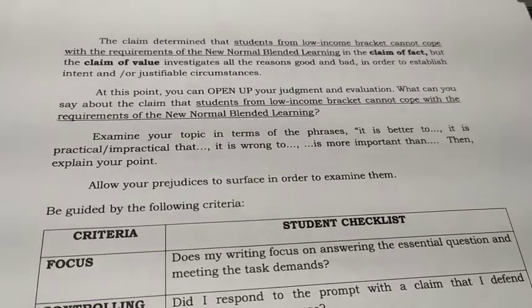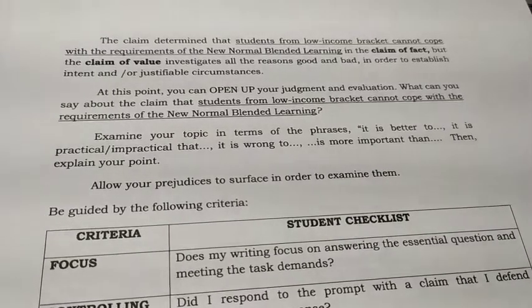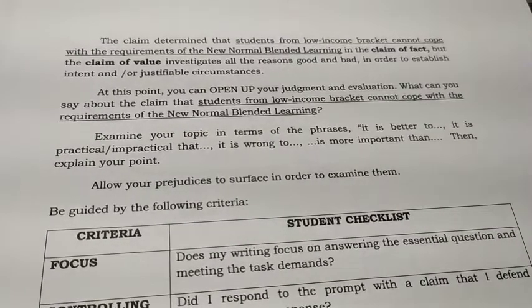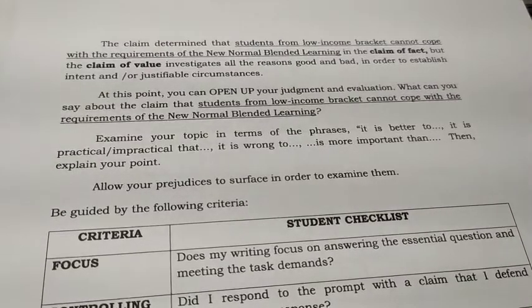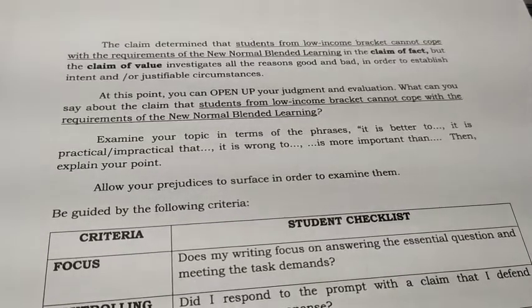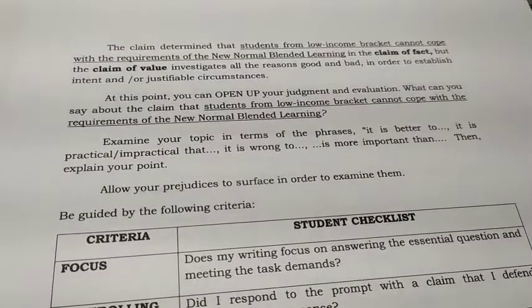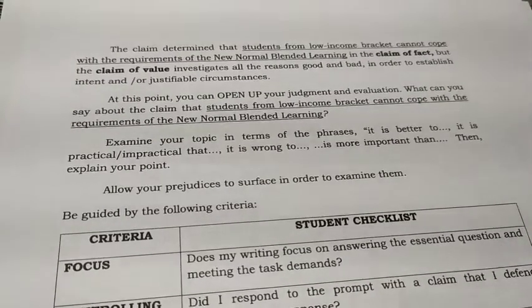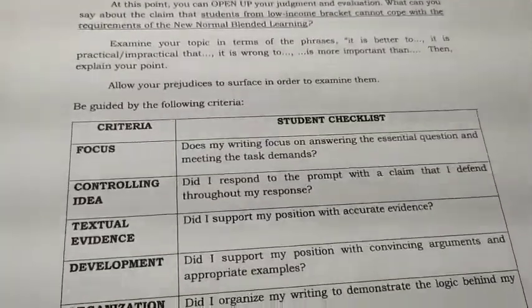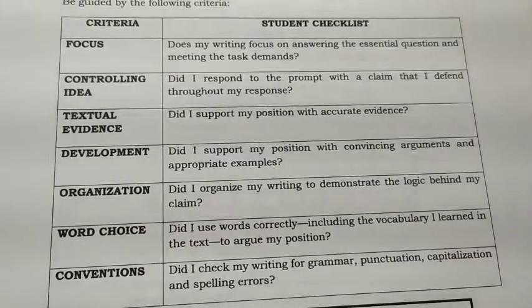To generalize: claim of fact is about the truthfulness of a claim — is it true or not? Claim of policy — we examine and judge if a policy is effective, should it be done or not. Claim of value — the importance of the claim, is it important to consider or not, is it good or bad. In this activity, you are guided by criteria: focus, controlling idea, textual evidence, development, organization, word choice, and convention.